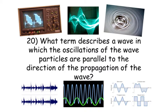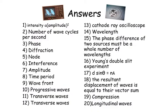And here are your answers. Number 1: intensity is proportional to amplitude squared. Number 2: number of wave cycles per second. Number 3: phase. Number 4: diffraction. Number 5: node. Number 6: interference. Number 7: amplitude. Number 8: time period. Number 9: wavefront. Number 10: progressive waves.